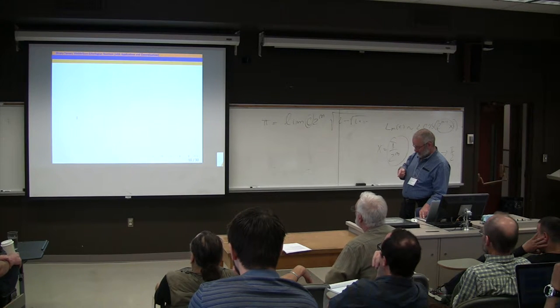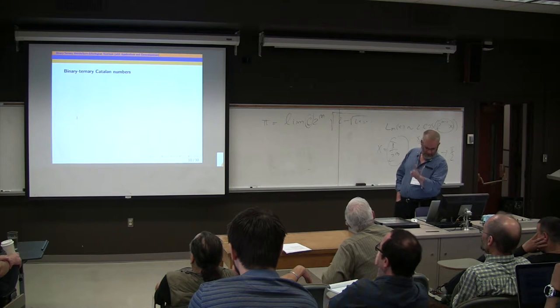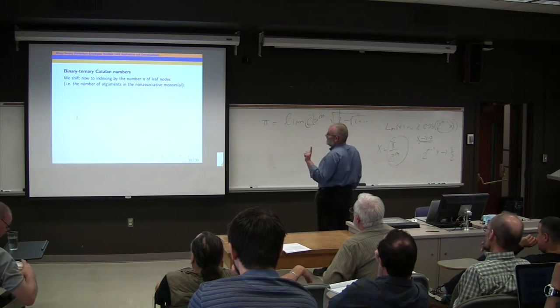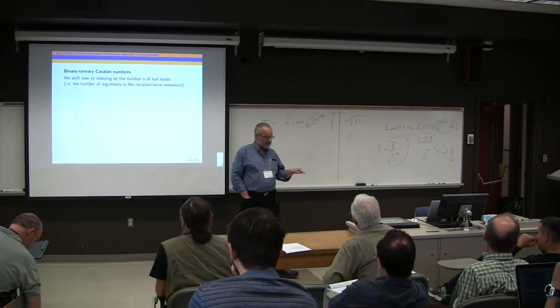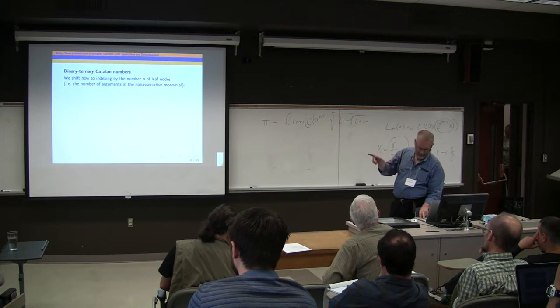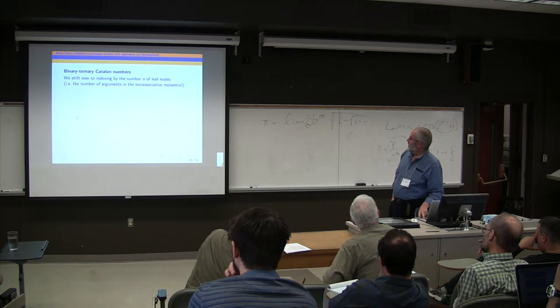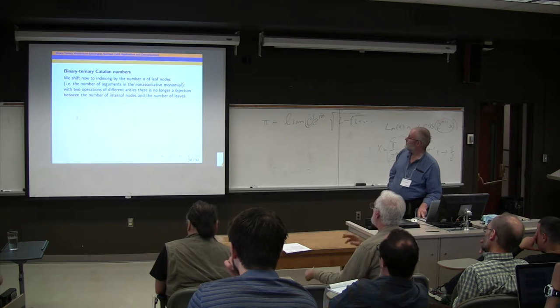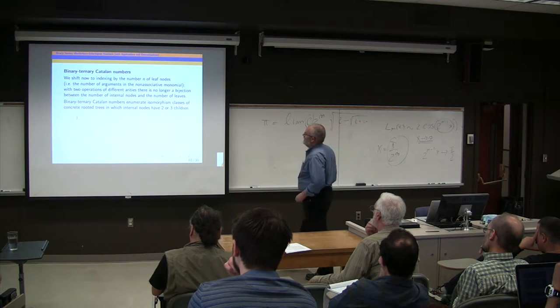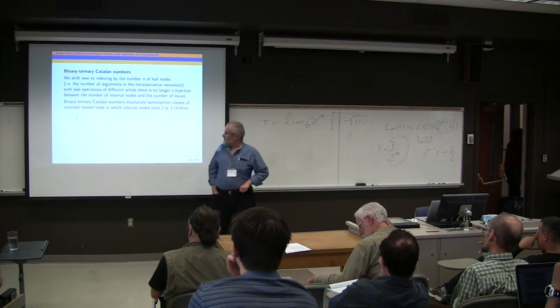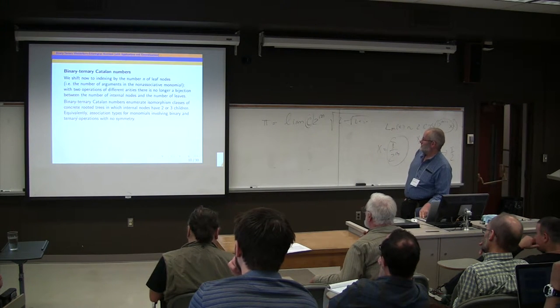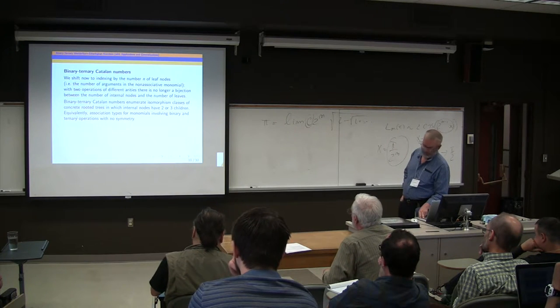Okay, so that's binary Catalan numbers, m-ary Catalan numbers. What if you have two operations, binary and ternary? And at this point, we're going to shift. The number n is now the number of leaf nodes, not the number of internal nodes. Because when you have two operations of different arities, the bijection doesn't work anymore between the number of leaf nodes and the number of internal nodes. Binary and ternary Catalan numbers are enumerating isomorphism classes of concrete rooted trees in which internal nodes have two or three children.